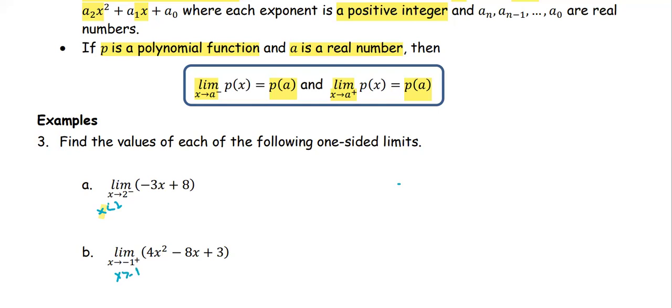We see negative 3x plus 8 as a polynomial function, same as 4x squared minus 8x plus 3, another polynomial function.